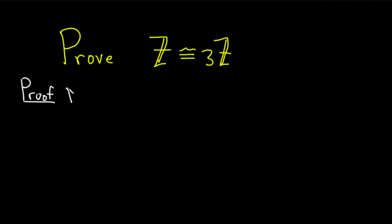Define phi from Z into 3Z by phi of x equals 3x. Note that this is totally well-defined, there's no issues here.